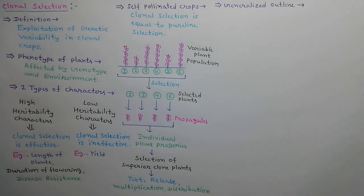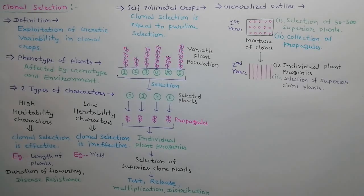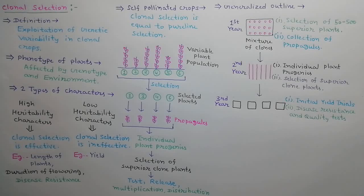We can elaborate the process of clonal selection by a generalized outline. In the first year, 50 to 500 superior plants are selected from a variable population, and propagules are collected from these selected plants separately. In the second year, individual plant progenies are developed and superior clone plants are selected. In the third year, initial yield trials are performed, and disease resistance and quality tests are performed.